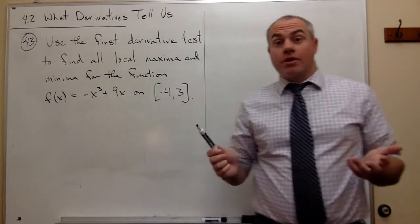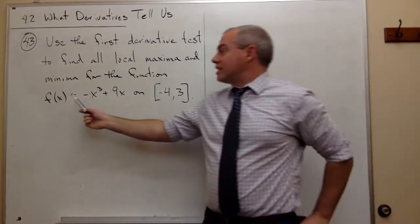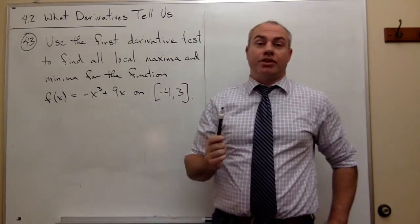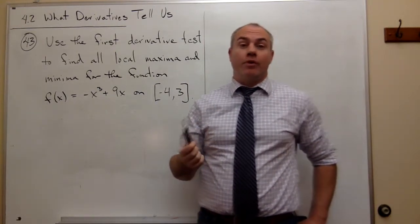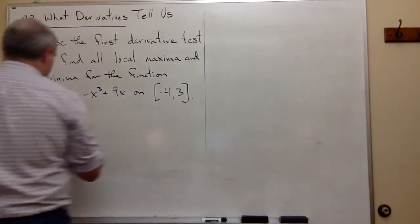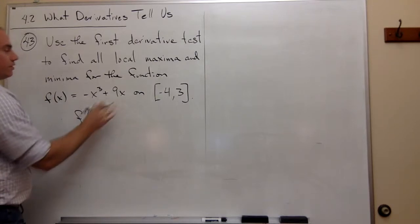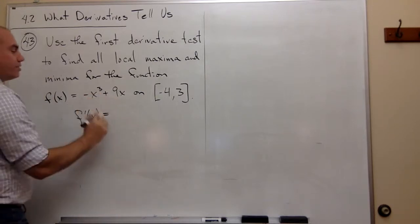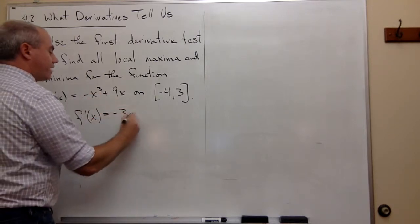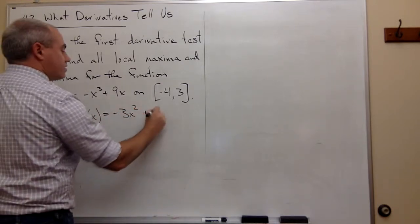Similar process we're going to go through again. First thing I want to do is take the derivative of the function and find all critical points. So let's start out taking the derivative. f'(x) equals, well, the derivative of -x³ is -3x², and the derivative of 9x is 9.